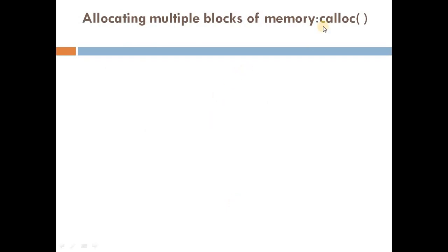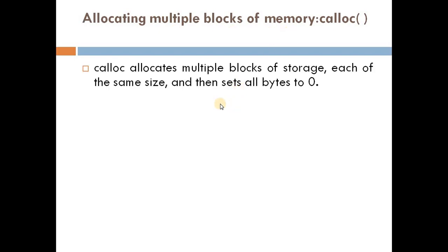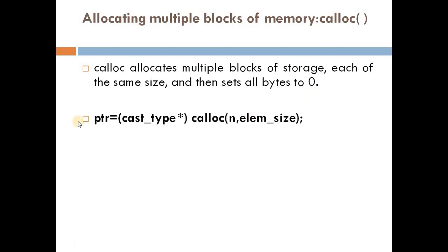Next we shall see calloc, which is also a dynamic memory allocation function used for allocating multiple blocks of memory. Unlike malloc, which creates a single block, calloc allocates multiple blocks of storage each of the same size, and then initializes all bytes to 0. This initialization to zero is one key additional feature of calloc.